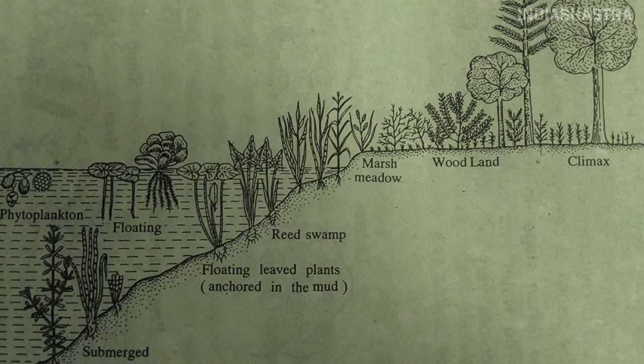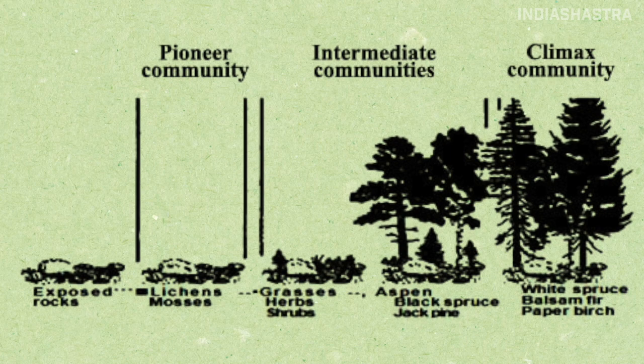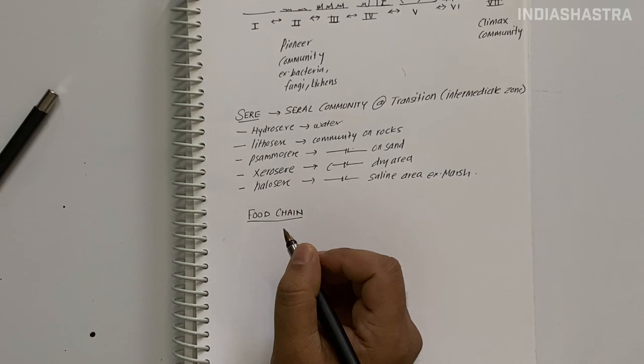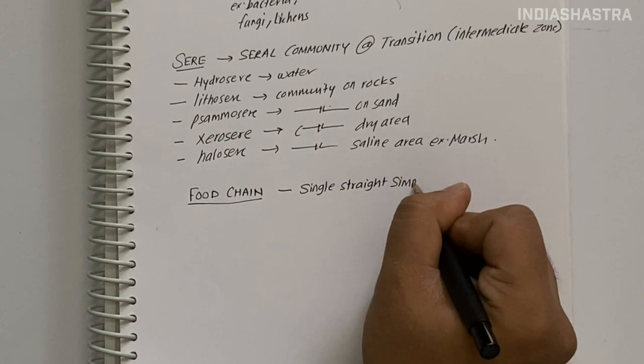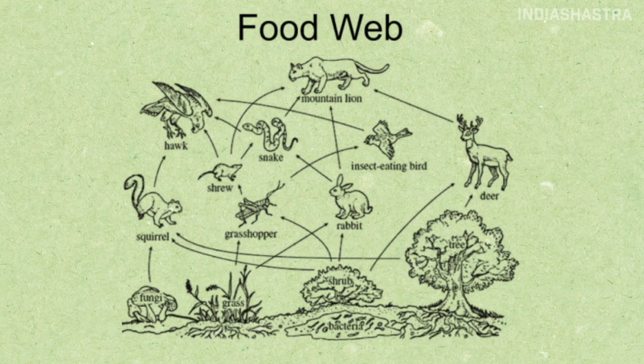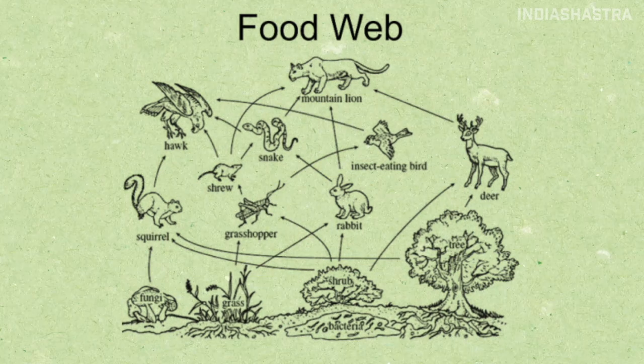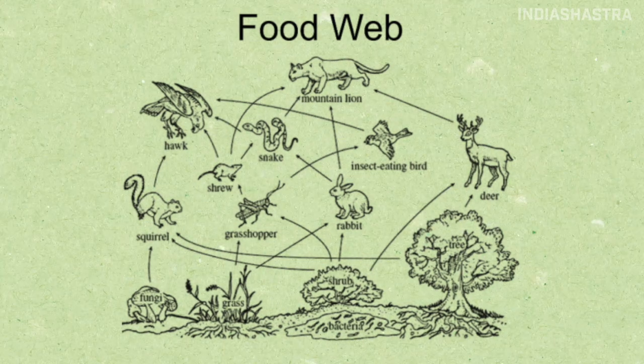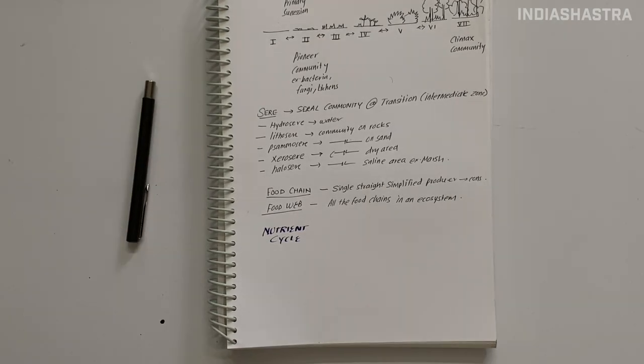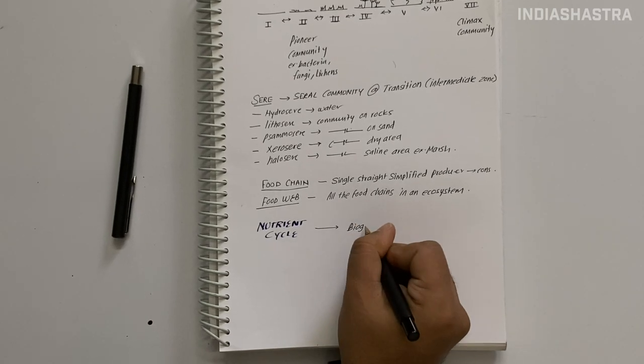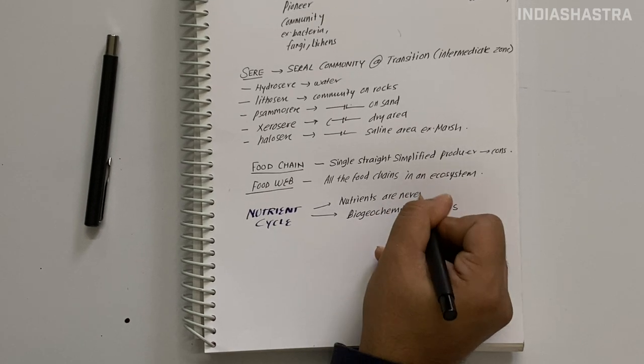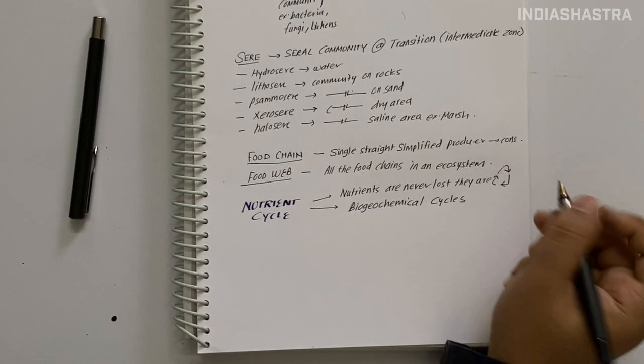If succession takes place in wet area, it's hydrosere succession. If in dry areas, xerosere succession. Food chain is a single straight chain from producer to final consumer. Whereas different interconnected food chains are called food web. A food chain outlines who eats whom. A food web is all the food chains in an ecosystem. In nature, we hardly find a food chain. We mostly find a food web.